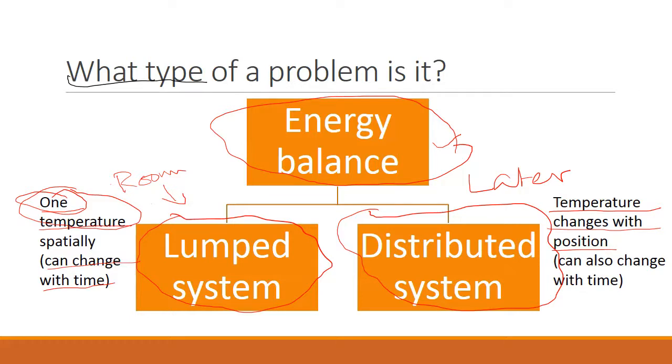But there is one big hint here. So we just started the course. There is nothing else that we have done. We have only done energy balance. And with energy balance, we can just solve for one temperature, which would be a lumped system. We cannot do the distributed systems, which need more information, as we will see later. So most likely, this will work.